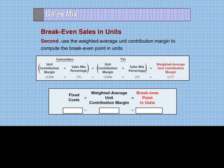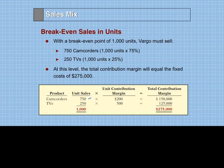Then we simply use that weighted average contribution margin of $275 and divide it into the fixed costs of $275,000, and we get a break-even point of 1,000 units total. Assuming the same sales mix, 75% — or 750 units — would be camcorders, and 250 of the 1,000 would be televisions. The total contribution margin at this sales level with this mix is exactly equal to fixed costs, which confirms the break-even.